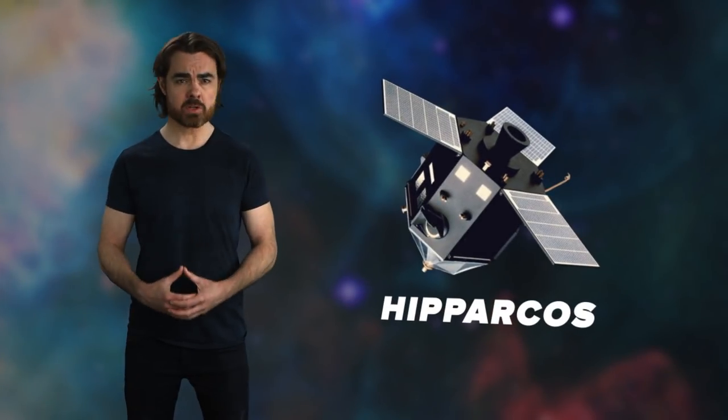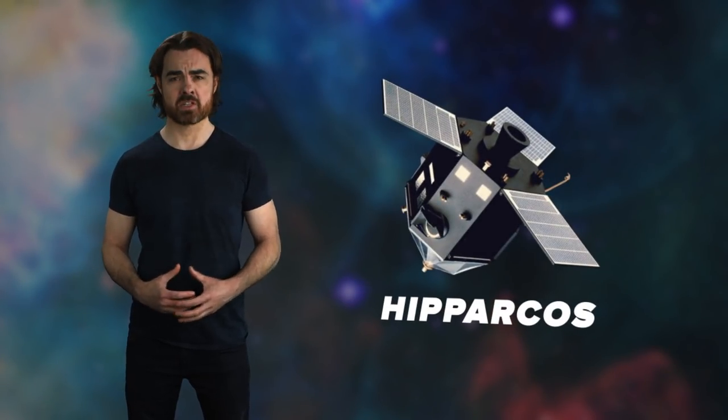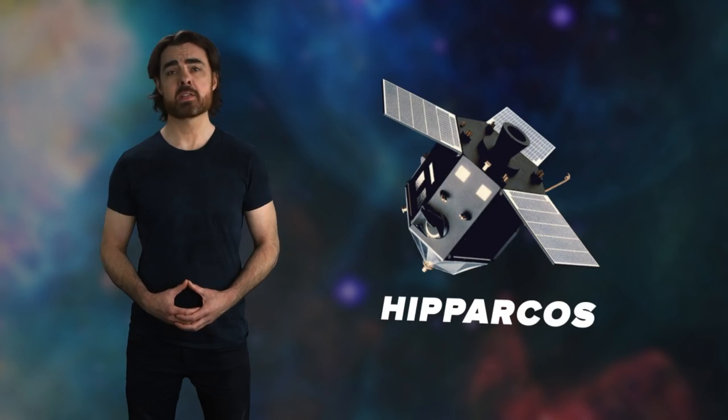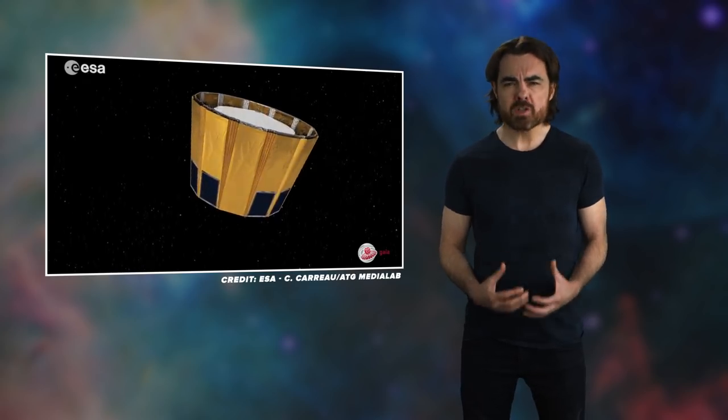Gaia's predecessor, Hipparcos, catalogued 120,000 stars. Gaia blows this out of the water with positions, colors, and brightnesses of nearly 1.7 billion stars. Gaia can see orders of magnitude fainter and further away than previous missions.